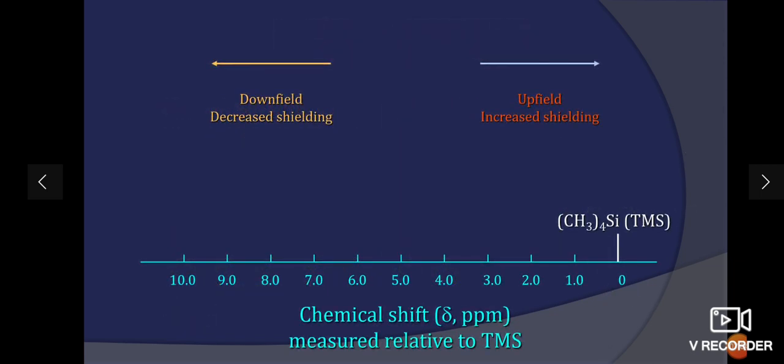This is the chemical shift in del ppm measured relative to TMS. Upfield means increasing shielding. If the values are moving towards 0, then it is called increased shielding or upfield. If the values are moving towards 9 or 10, it is decreased or downfield shielding.